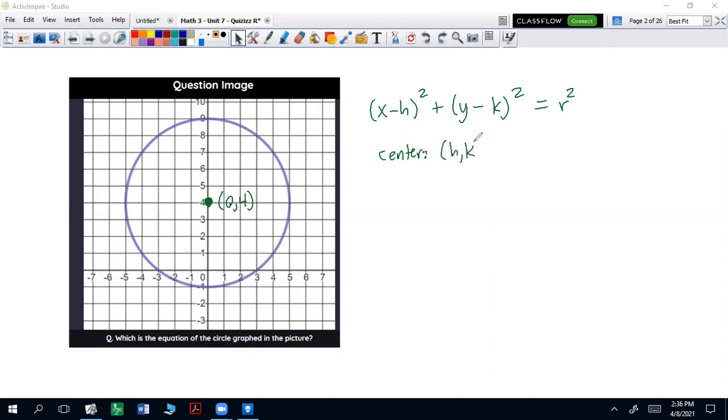So we've got h and k, and the radius is going to be r. First we've got the center at (0,4). The radius we can count out in any direction. I'm going to go up here.